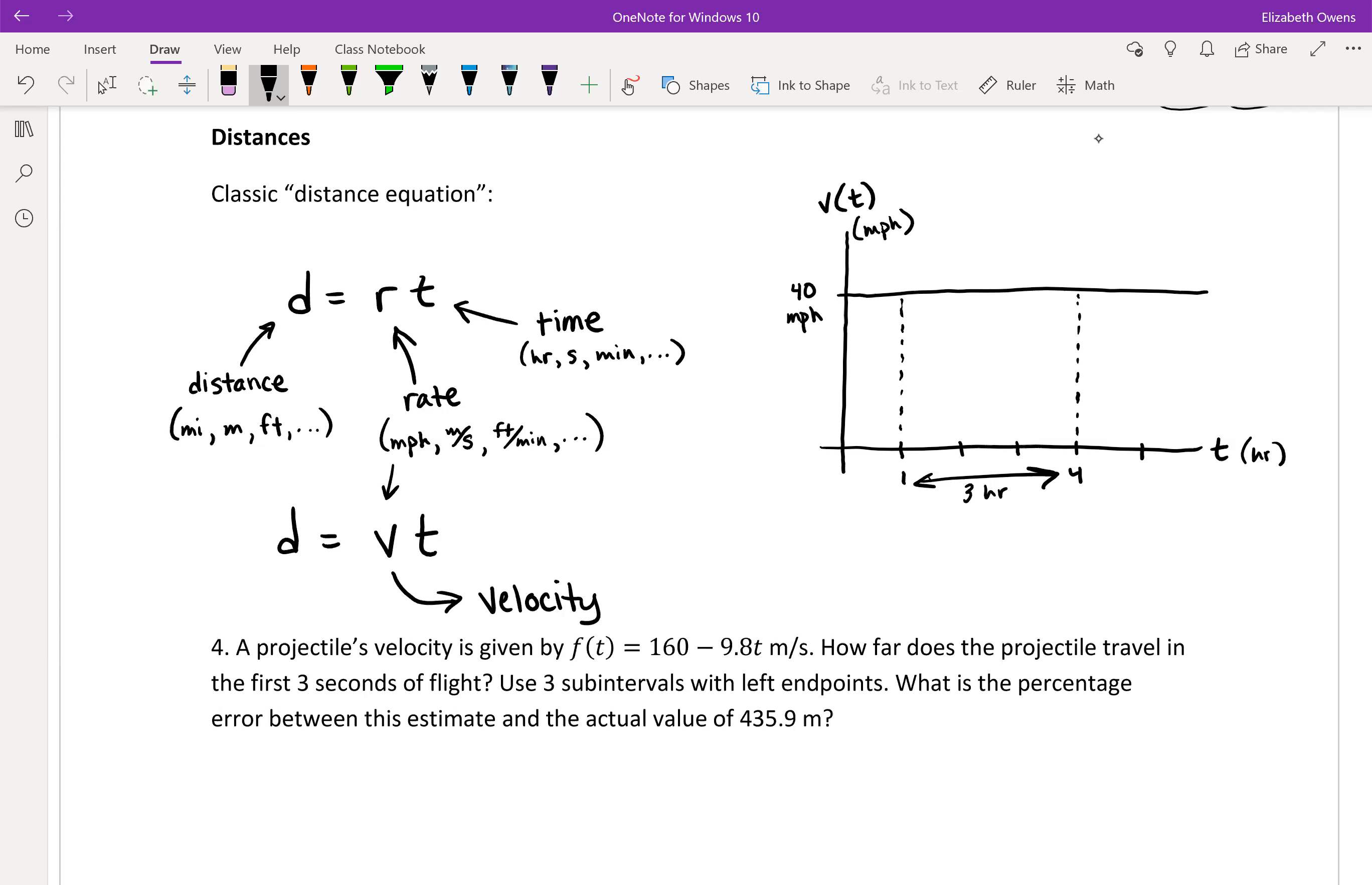So what we're doing there is we're multiplying the three hours here by the 40 miles per hour there, which could also be thought of as the dimensions of this rectangle here. Three in this direction by 40 in this direction. Multiplying those together would give you 120, which is the miles that we're traveling.